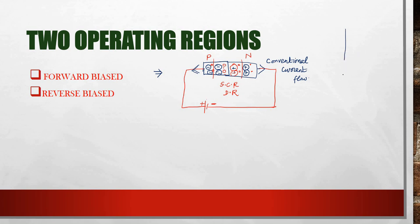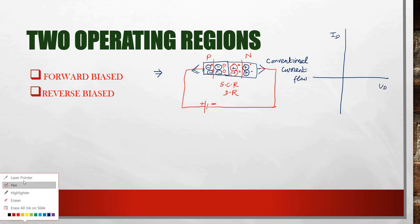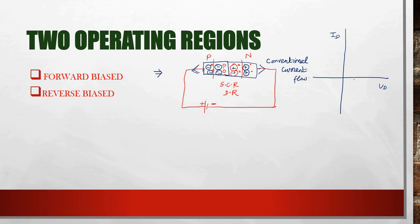These are the basics of the forward bias operation. In a forward bias condition, the diode current and diode voltage relationship shows that up to the cut-in voltage there is no conduction. The cut-in voltage is 0.7 volts for silicon and 0.3 volts for germanium. This is the forward bias region of operation.